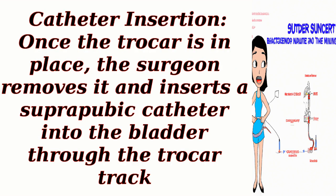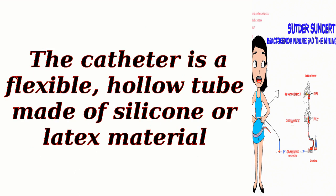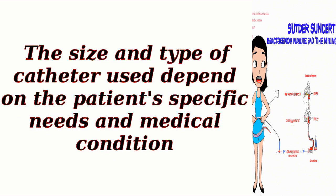Step 5: Catheter insertion. Once the trocar is in place, the surgeon removes it and inserts a suprapubic catheter into the bladder through the trocar track. The catheter is a flexible, hollow tube made of silicone or latex material. The size and type of catheter used depend on the patient's specific needs and medical condition.